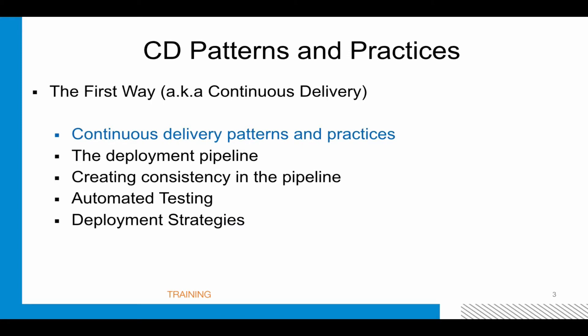One of the things that came out of the Phoenix Project, and that we covered extensively in the DevOps Handbook, is the concept of the Three Ways of DevOps. The first way is really about continuous delivery — it's about the flow, systems thinking about a left-to-right flow, the automated software delivery supply chain, the commit, the whole continuous delivery process.